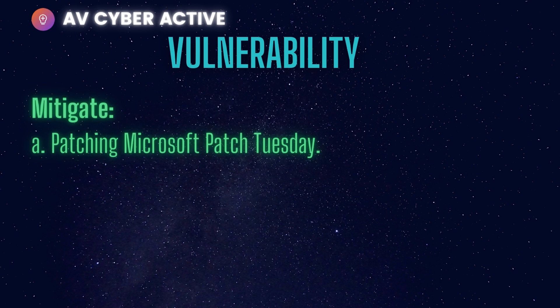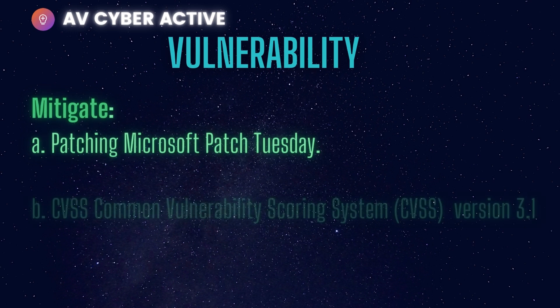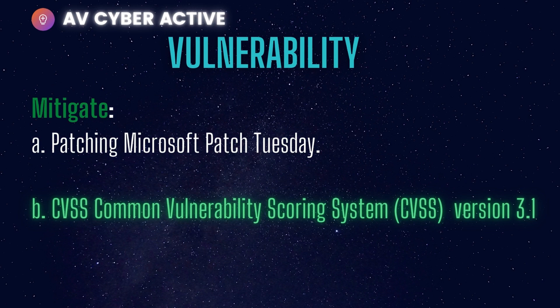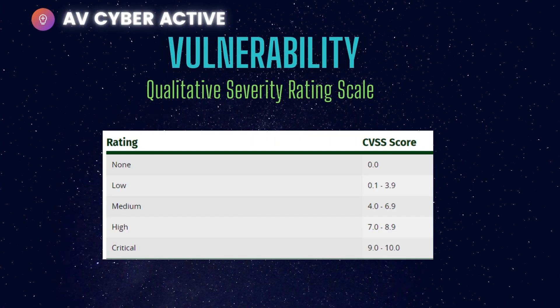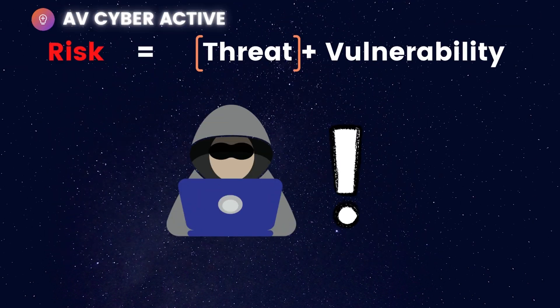The second important thing is the CVSS score for a vulnerability. Any time a vulnerability is released, it must be documented and published on a vendor's website with a score. We are currently on scoring system version 3.1. It is a qualitative rating system — scores range from zero (None), Low, Medium, High, to Critical. Critical vulnerabilities are the ones you want to patch as soon as they are released.